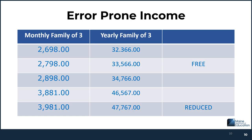Here's an example. For this school year, the income guidelines for a family of three monthly for free is $2,798, and yearly is $33,566. For reduced, monthly is $3,981 and annually is $47,767. So if they fall within $100 of $2,798 monthly, it's error prone. If it's $100 above the reduced guideline of $3,981, it would be a denied application and therefore not error prone and not subject to the verification process.